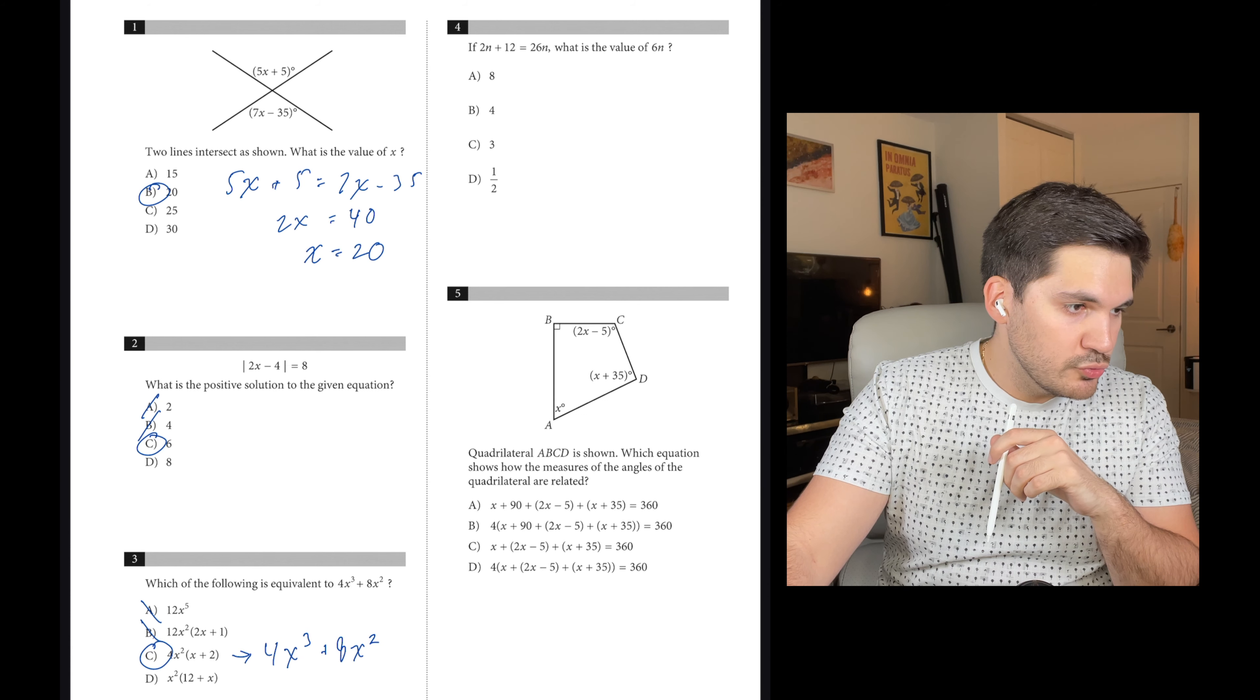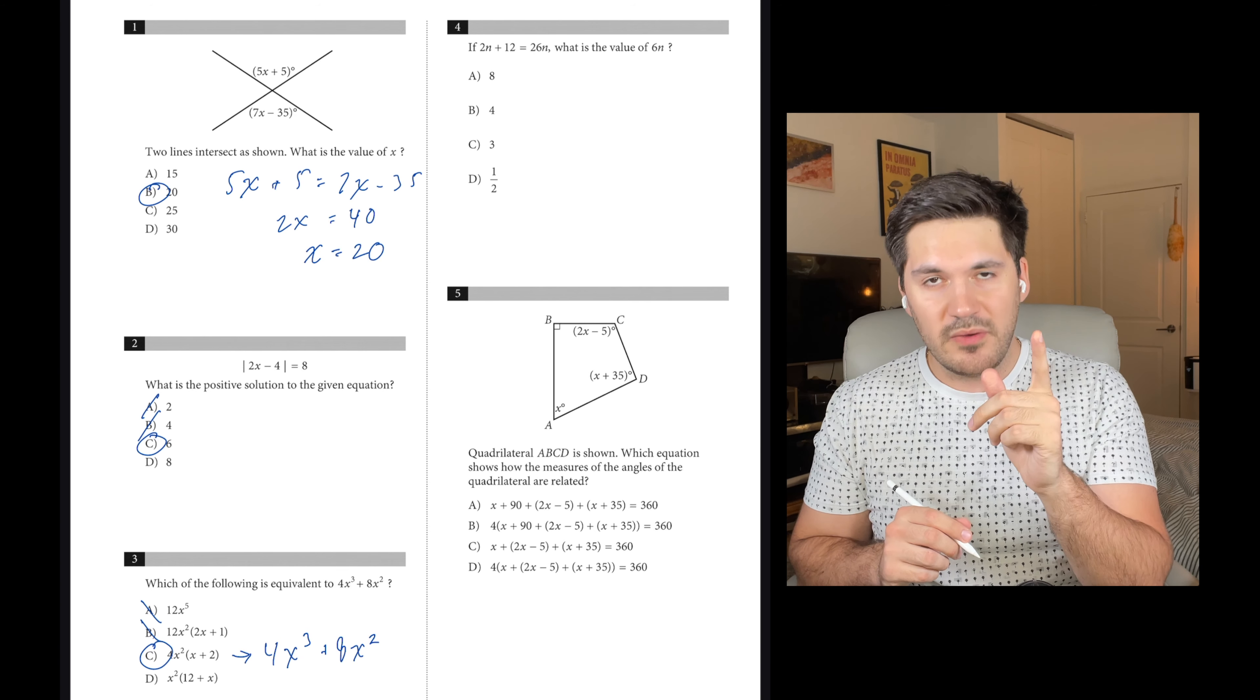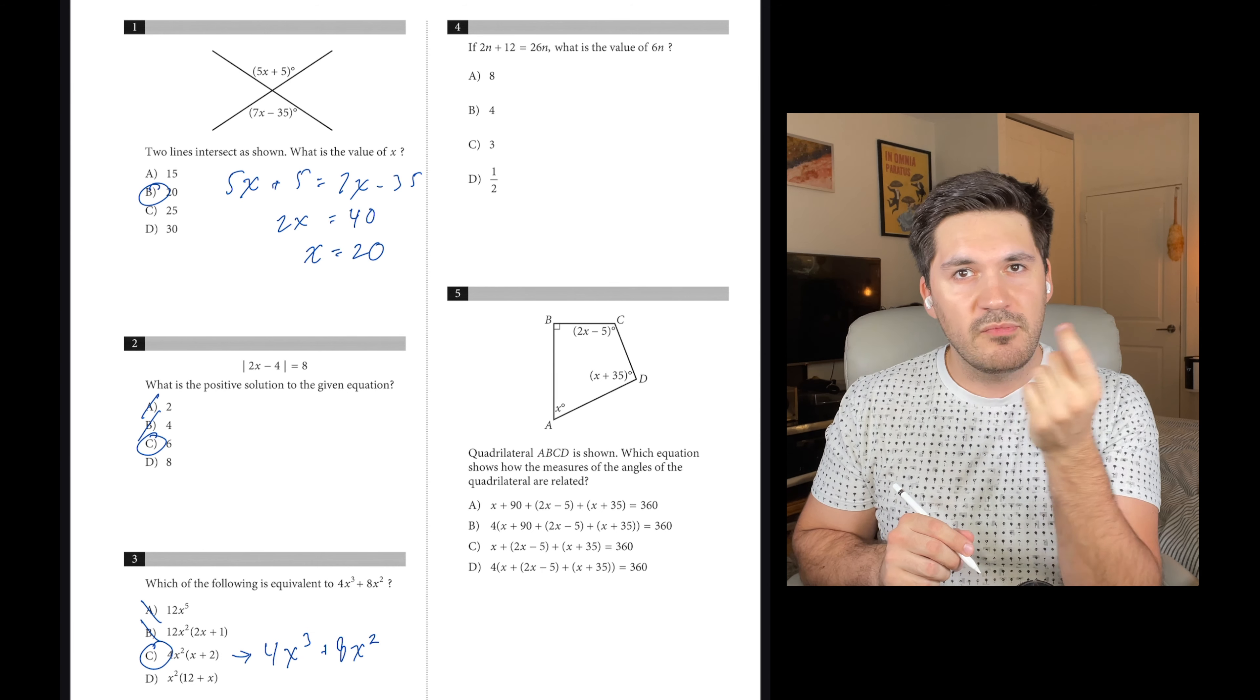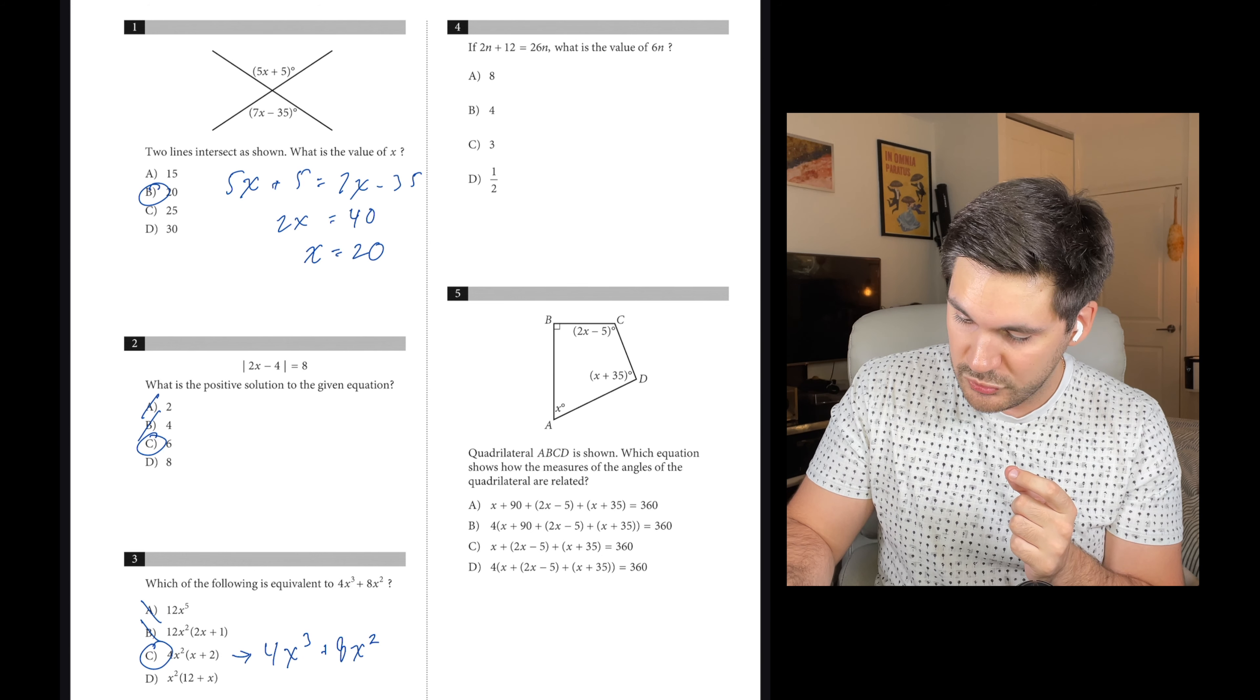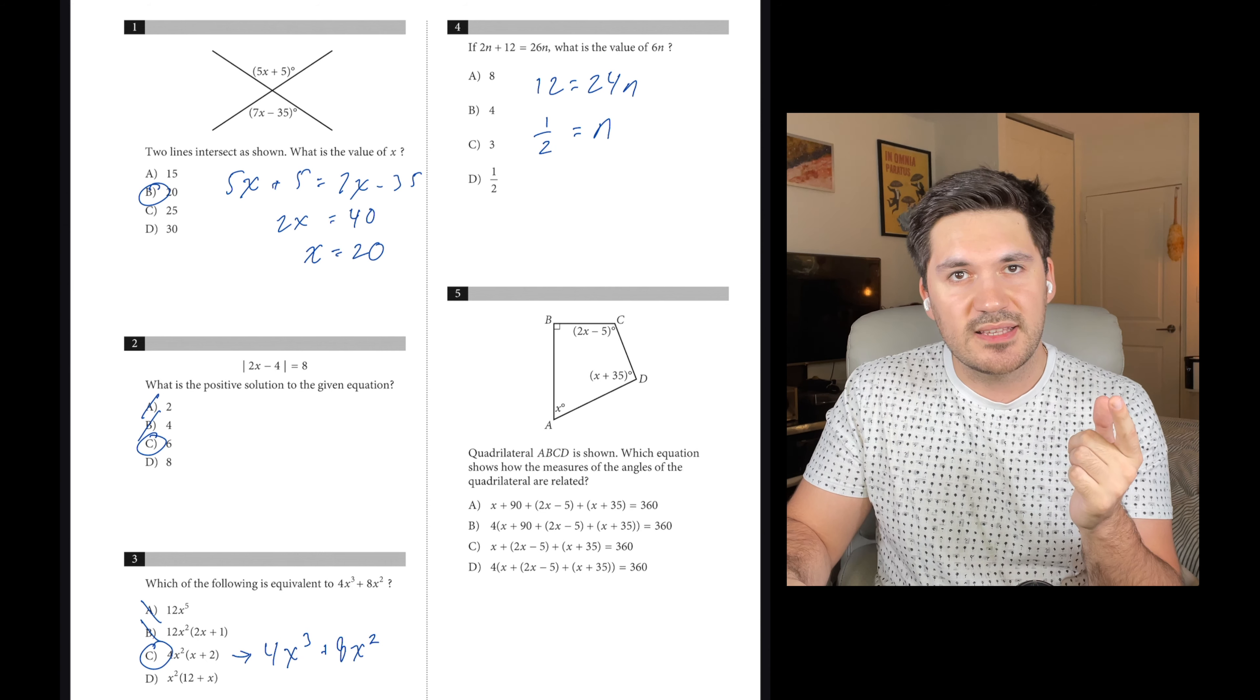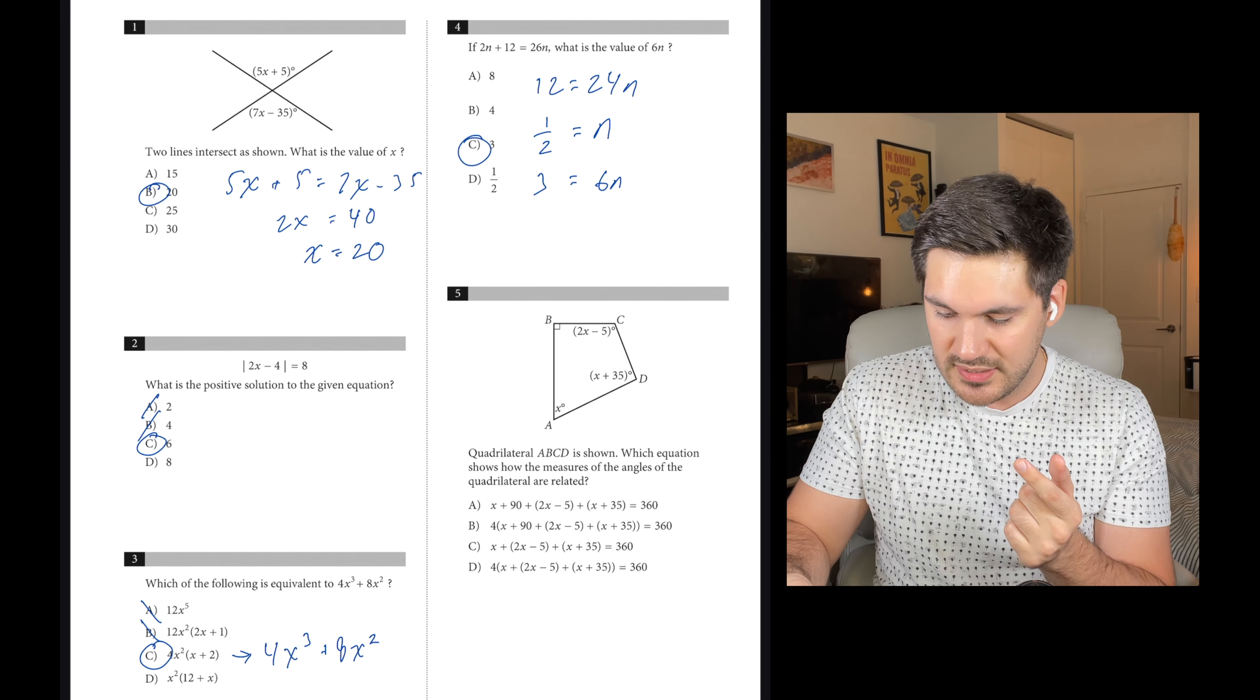Number four, if 2n plus 12 equals 26n, what is the value of 6n? The most important thing here is that very frequently students will figure out what n is rather than 6n. So you need to get the value of n and then remember to multiply it by 6. 12 equals 24n, so n equals 1 half. To get 6n, we multiply both sides by 6, so 6n equals 3. C is our answer.